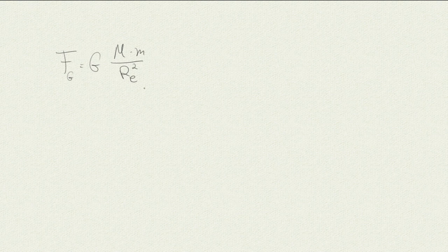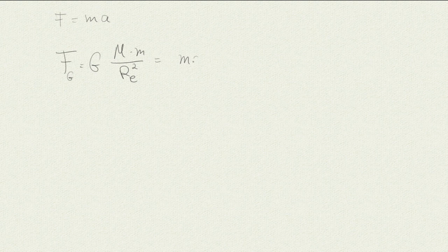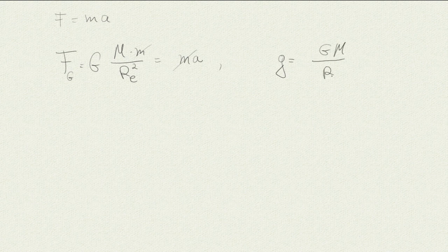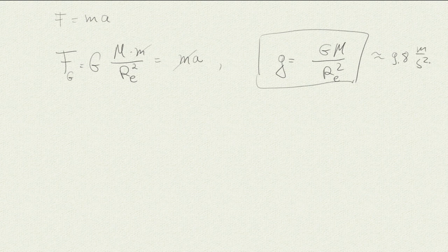Now, what about the constant acceleration we want to derive? If the force of gravity acting on the object is G·M·m / R_e², a fixed and constant quantity, then using Newton's second law F = ma, if gravity is the only force acting, we divide both sides by m and find that the acceleration — the free-fall constant acceleration on Earth — is lowercase g = G·M_earth / R_e², which we know is roughly 9.8 meters per second squared.